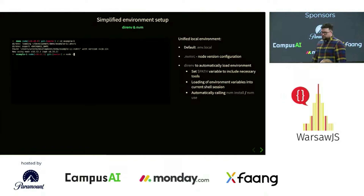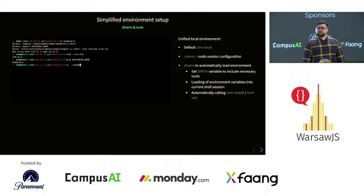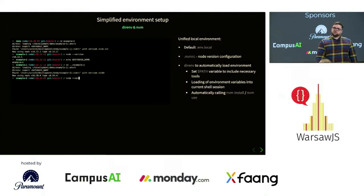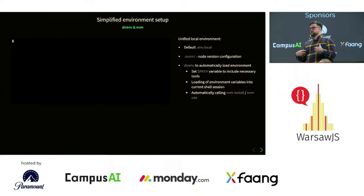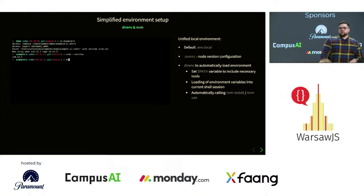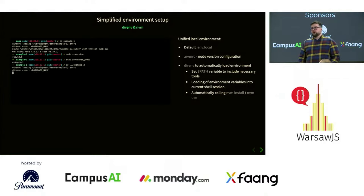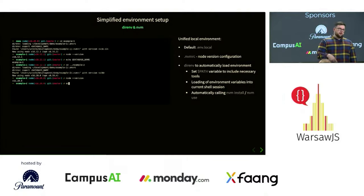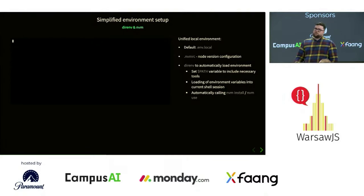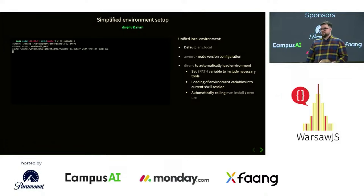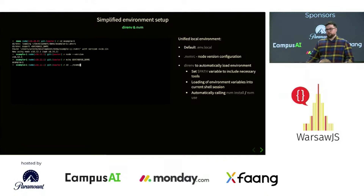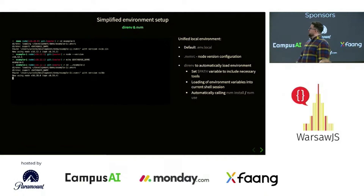The first tool I'd like to talk about is DIRENV and NVM. Probably everyone has used NVM at some point, and if not, I highly recommend it. But another tool I'd like you to use is DIRENV — it gives you the ability to switch your Node version or environment variables, including paths, once you switch directories. That way you have no weird surprises when switching between projects — one on Node 16 and another on Node 20. Debugging for 30 minutes only to find it was the wrong Node version happened more often than you'd expect.